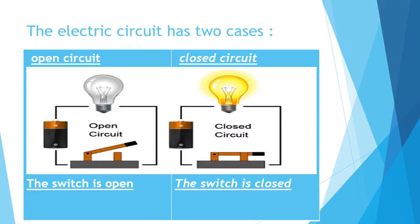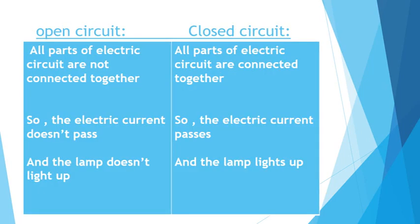The electric current cannot pass, so the lamp is turned off — there is no electricity reaching it. In the open circuit, all the parts or components of the electric circuit are not connected together. The open switch creates something like a breakage — it's an incomplete circuit, meaning the electric current or electricity doesn't pass.